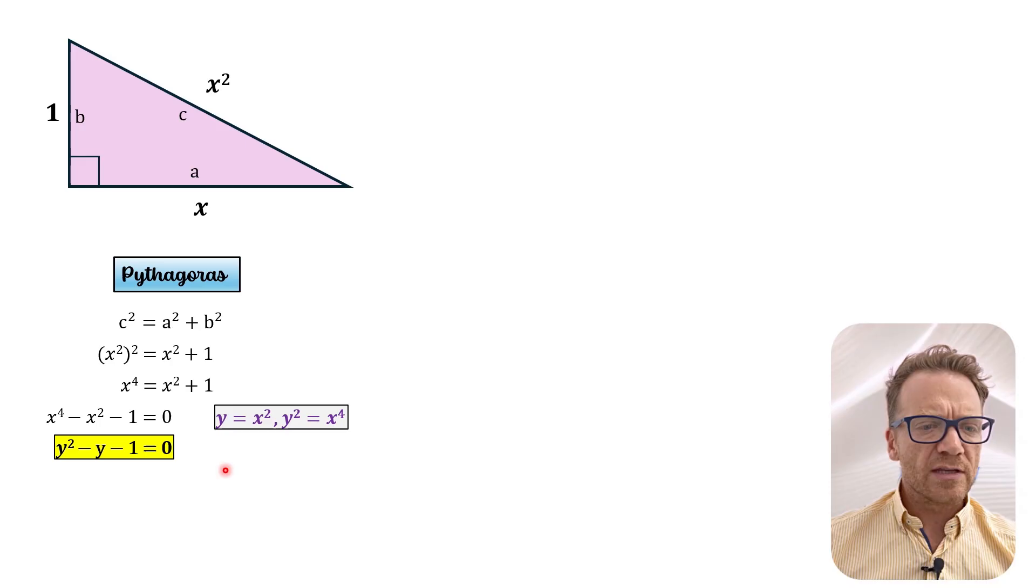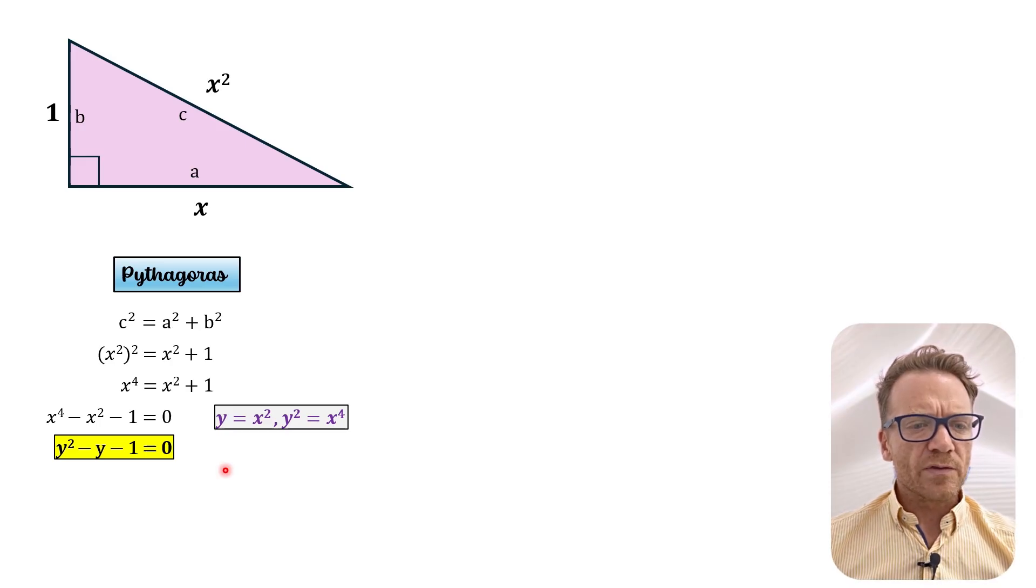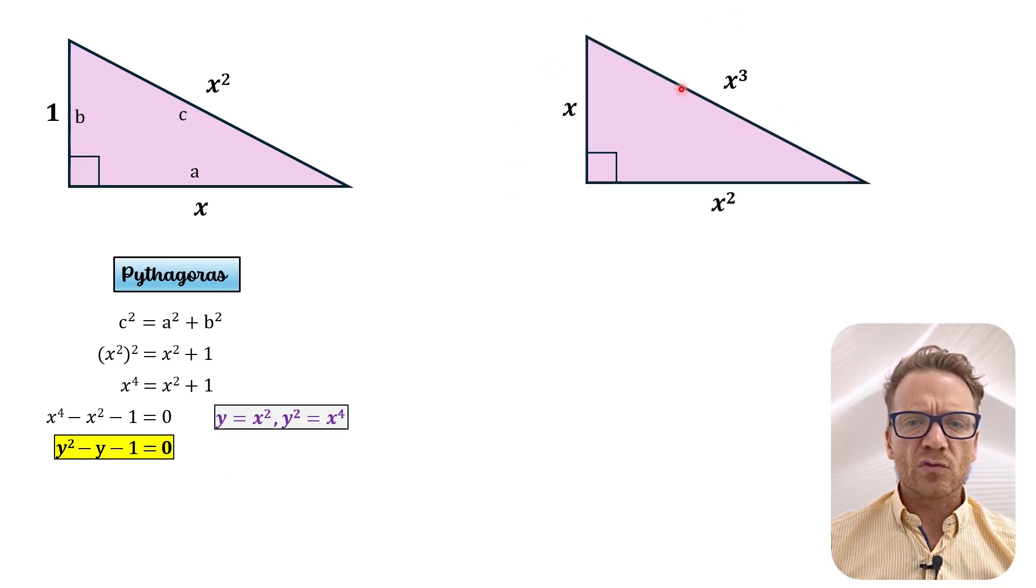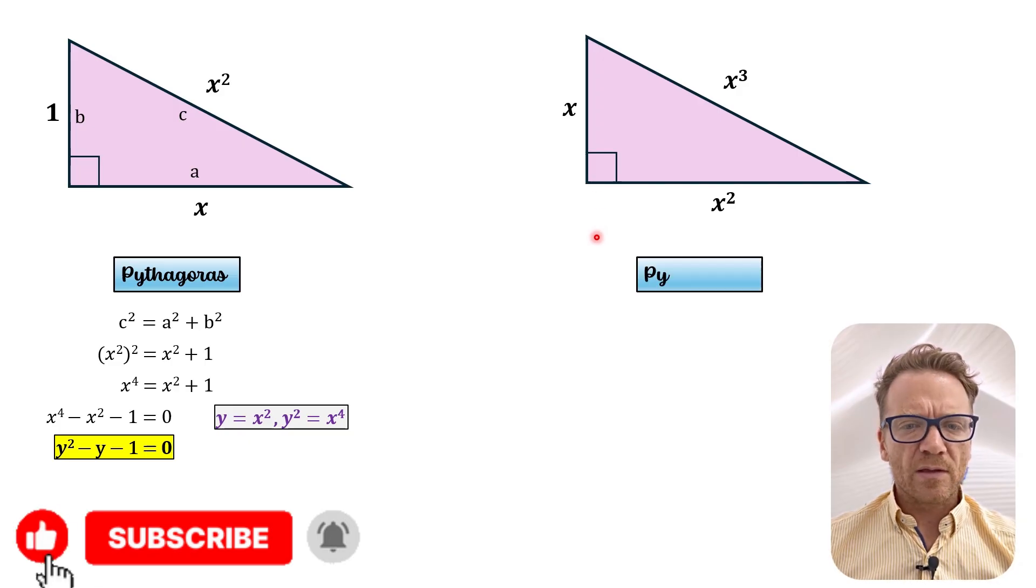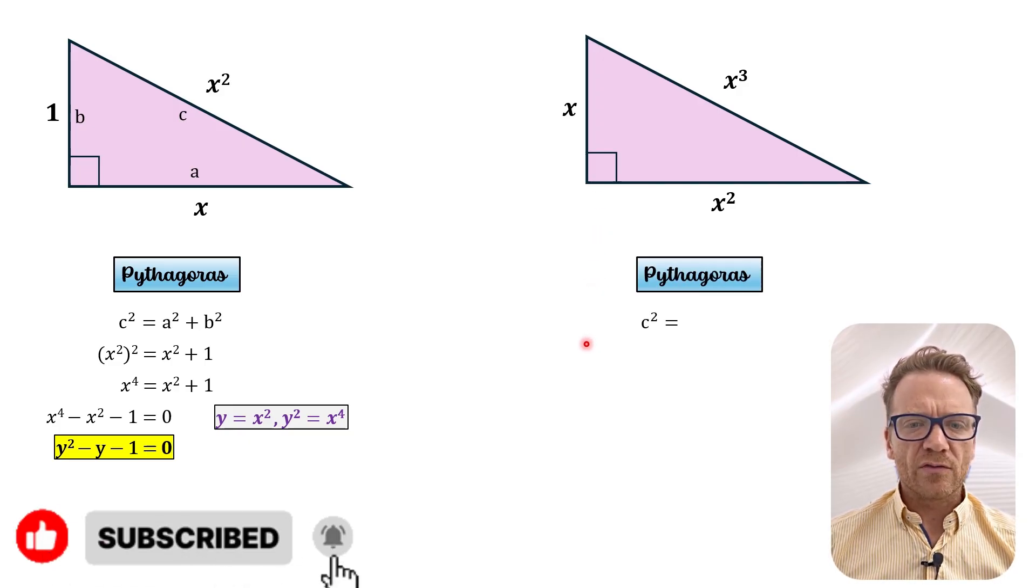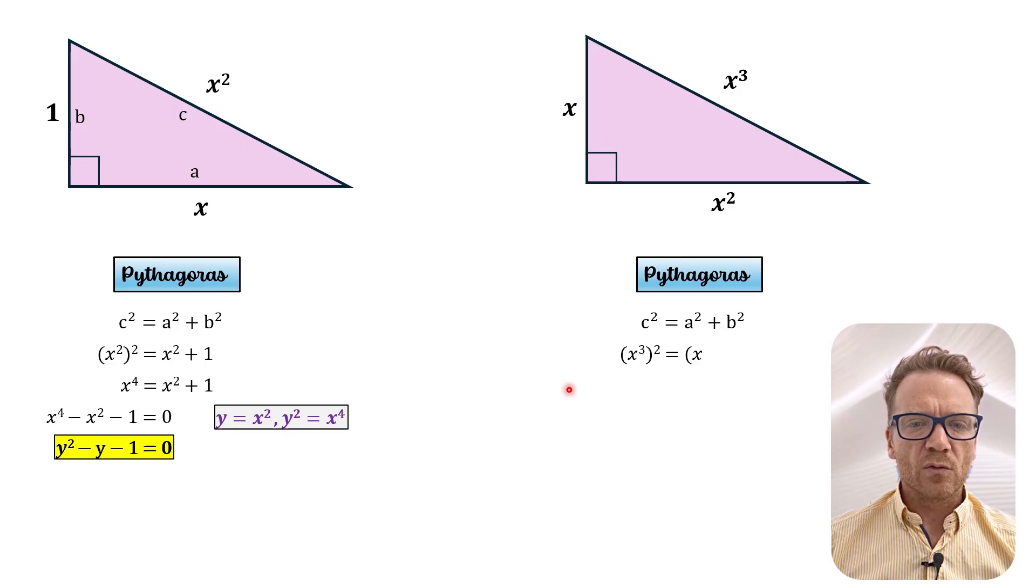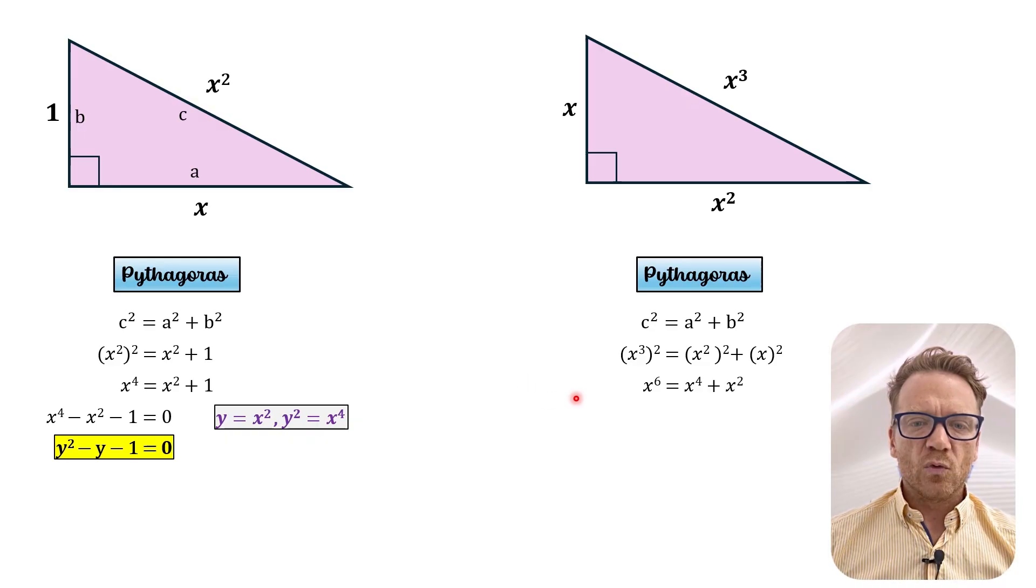Now there's actually a step before this where if we just consider the original problem we can do the exact same thing. So using Pythagoras we would get the following where we have x cubed squared equals x squared squared plus x squared. And we also set this to 0. So we get x to the power of 6 minus x to the power of 4 minus x squared equals 0.